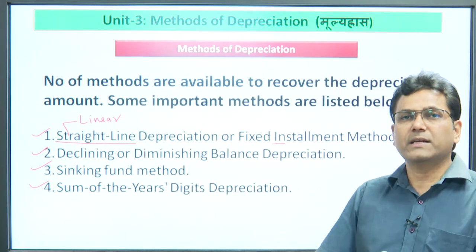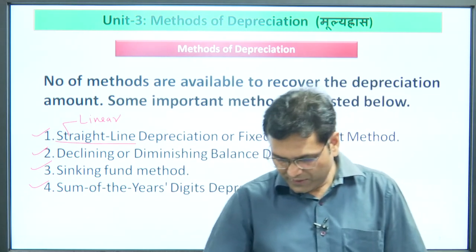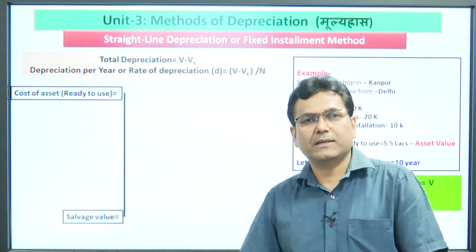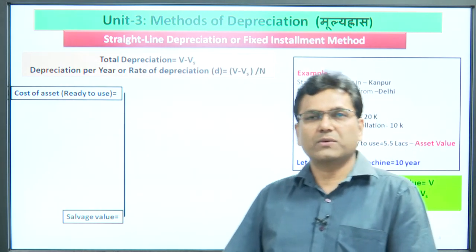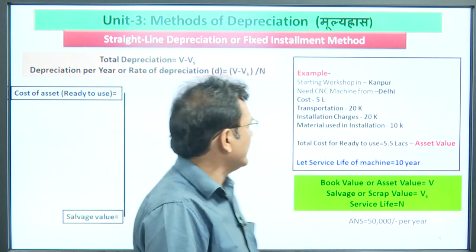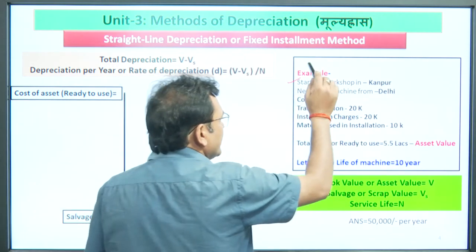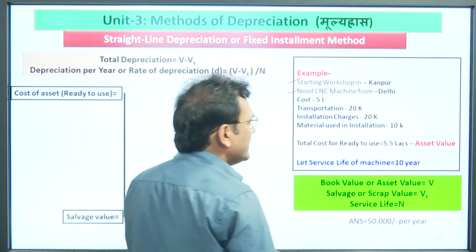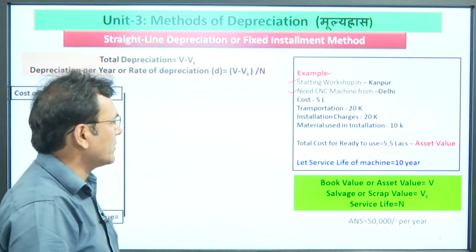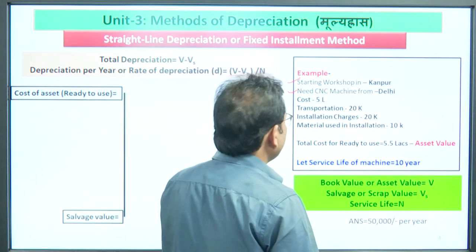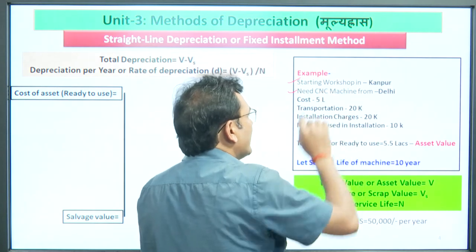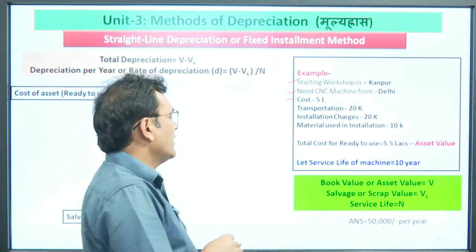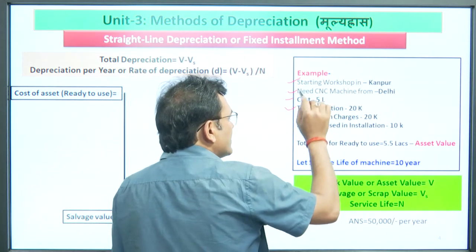Continuing with the previous problem: we wanted to start a workshop in Kanpur. We needed a CNC machine, which we decided to purchase from Delhi. The machine's initial cost was 5 lakh rupees. Transporting it from Delhi to Kanpur would cost 20,000 rupees, and the installation charge for the specialized engineer was also 20,000 rupees.